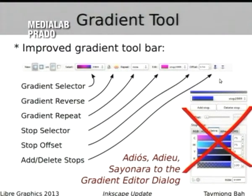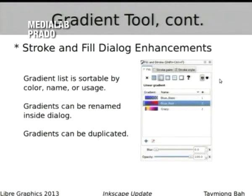The gradient tool has an improved gradient toolbar. Everything that used to be in the gradient editor dialog is now in that toolbar, so you can say goodbye to the dialog. The stroke and fill dialog has had enhancements — gradients are listed, and you can sort the list by color, name, or number of times they're used. You can rename your gradients to keep track of them, and duplicate them to make changes to the copy.